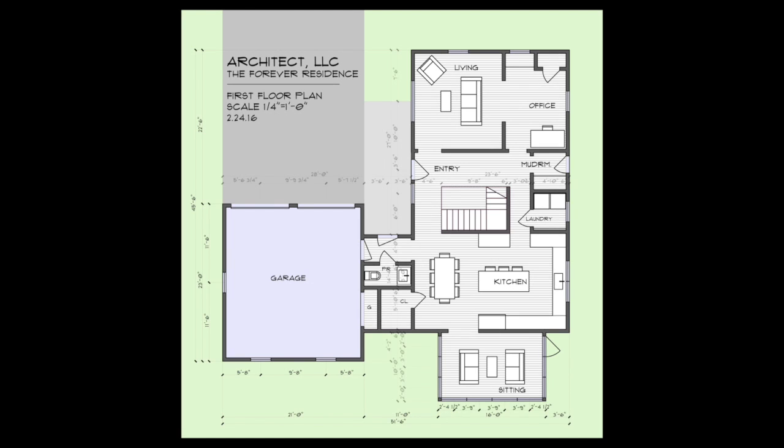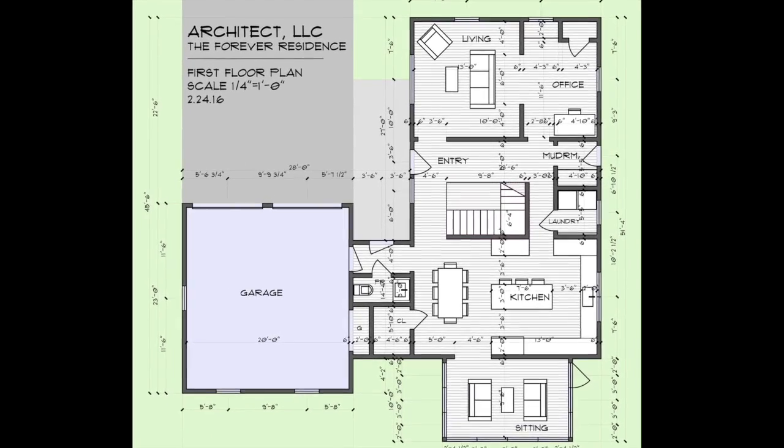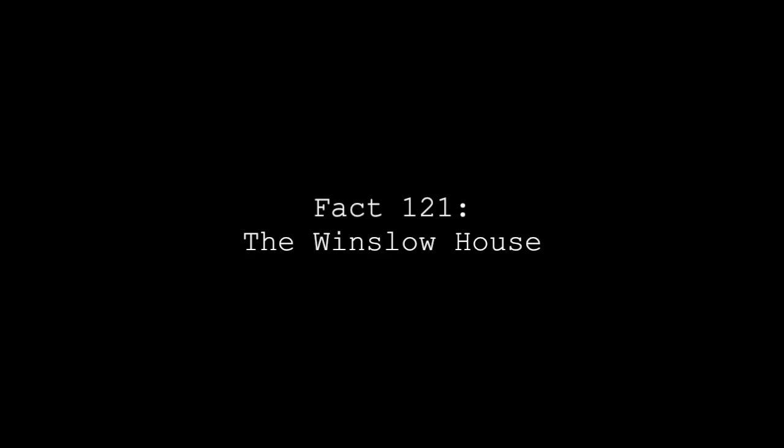The fourth phase of the architect's work with a client is called construction documents. It's then that the architect creates a record set of documents that includes specifications and dimensional drawings used by the contractor to build the building.